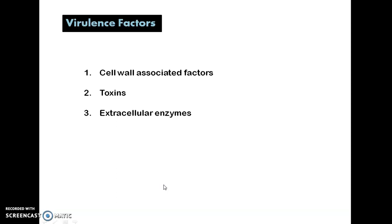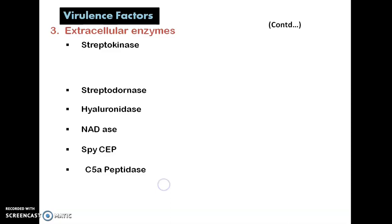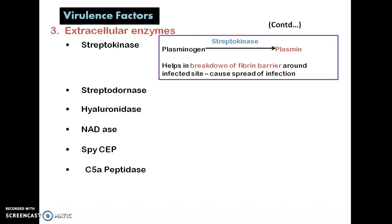The extracellular enzymes are the last group of virulence factors. The first one is streptokinase. Streptokinase mediates the conversion of plasminogen into plasmin. This plasmin helps in the breakdown of the fibrin barrier around the infected site, causing the spread of infection. When we have any skin infection, there will be infiltration of neutrophils, and if there is bleeding, fibrin forms for blood clotting — this fibrin can be dissolved by plasmin with the help of streptokinase, weakening the blood clotting and causing the spread of infection.